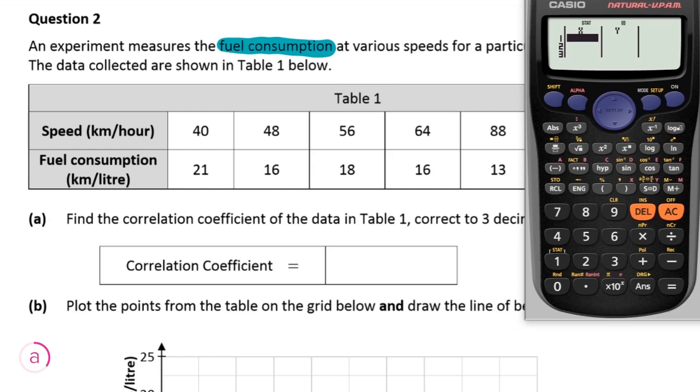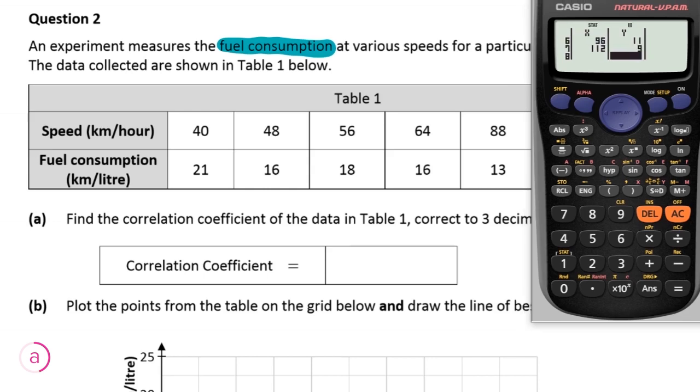And this is the table we're going to type in our X and Y values to. So our X values are just going to be the speeds in kilometers per hour. So 40, 48, 56 as you can see in Table 1. And our fuel consumption is going to be just the other values below those. So 21, 16, 18 and so on. Okay, so now we've typed in all our values into our table, as you can see here.